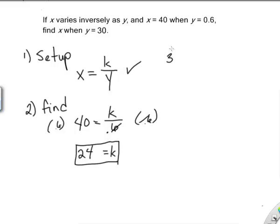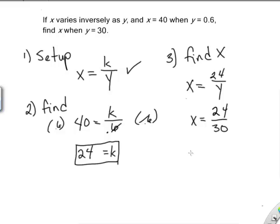And so for step three, we need to find x, the variable that they're asking us for. And so from step one, we know that x is equal to k over y, but now we can say that x is equal to 24 over y, and it asks us specifically to find x when y is equal to 30. When y is equal to 30, and when we divide 24 divided by 30, we end up with x is equal to 0.8.